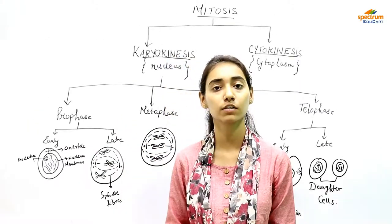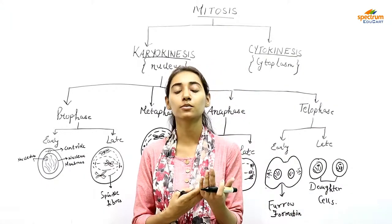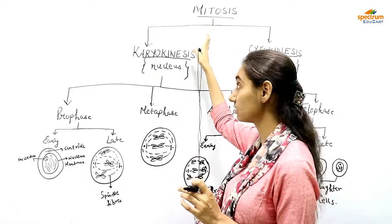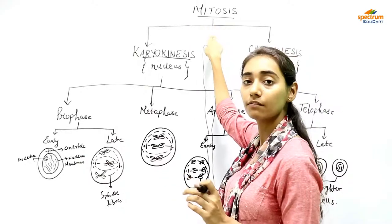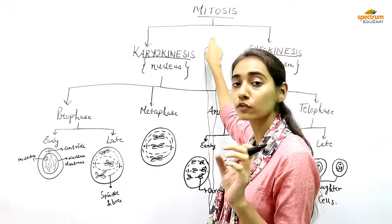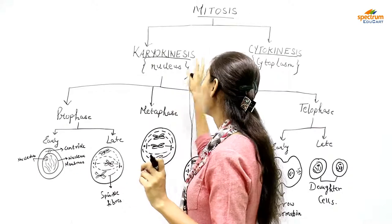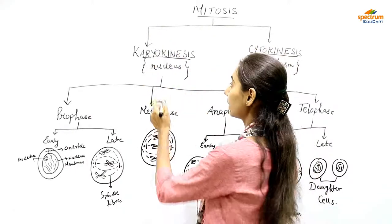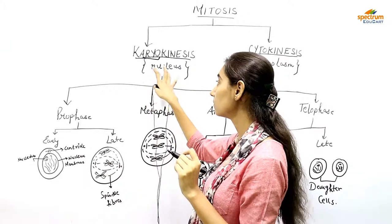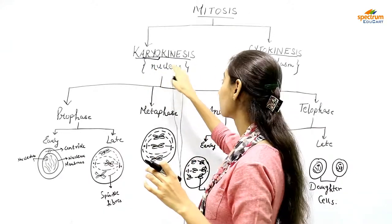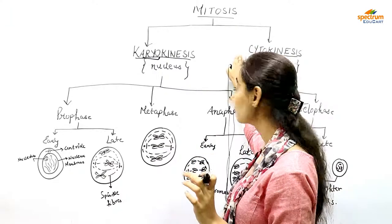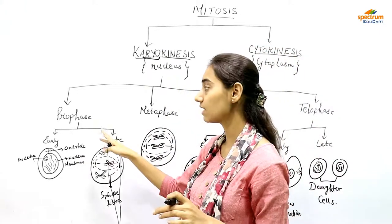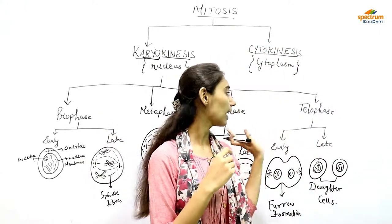We have studied the structure of the chromosome and the DNA content and its role in cell division. Now we will study in detail the process of cell division called mitosis. In mitosis, the diploid number of chromosomes — that is 2n — is maintained. The process of mitosis is divided into two stages: karyokinesis, which is the division of the nuclear content, and cytokinesis, which is the division of the cytoplasm. Karyokinesis is divided into four phases: prophase, metaphase, anaphase, and telophase.